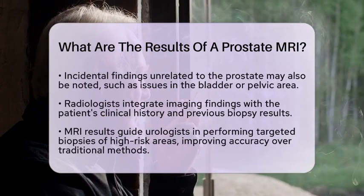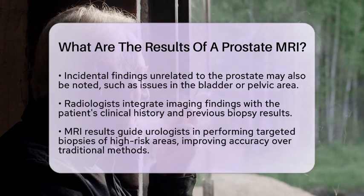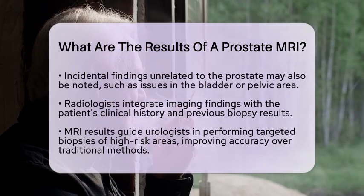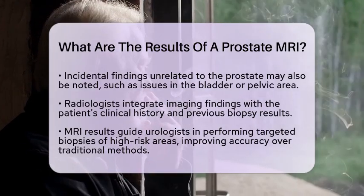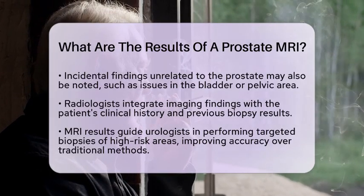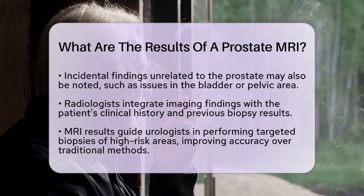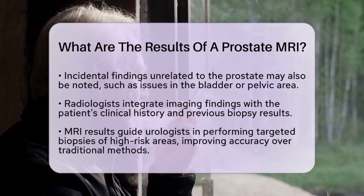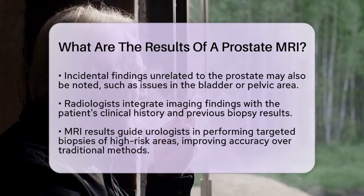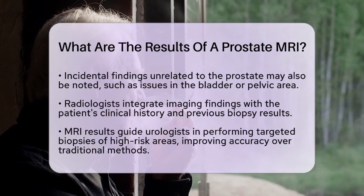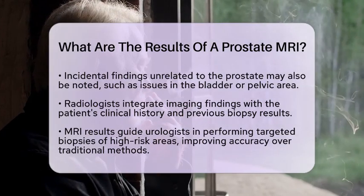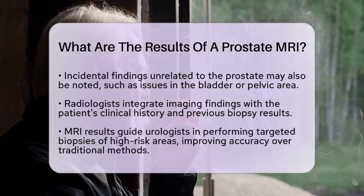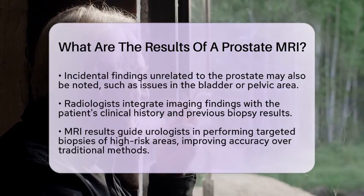In oncology, the results of a prostate MRI have practical applications. For example, they guide urologists in performing targeted biopsies of high-risk areas, which are more accurate than traditional random biopsies. Additionally, MRI plays a crucial role in staging cancer and planning treatment. It helps determine the extent of cancer, such as whether it has spread beyond the prostate, which influences decisions about surgery, radiation, or active surveillance.